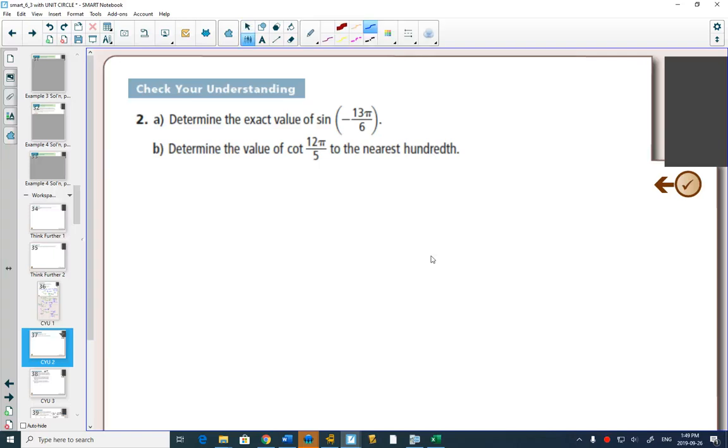This one will be fairly quick. Determine the exact value of sine of negative 13 pi over 6. Really easy to tell that our reference family is pi over 6.